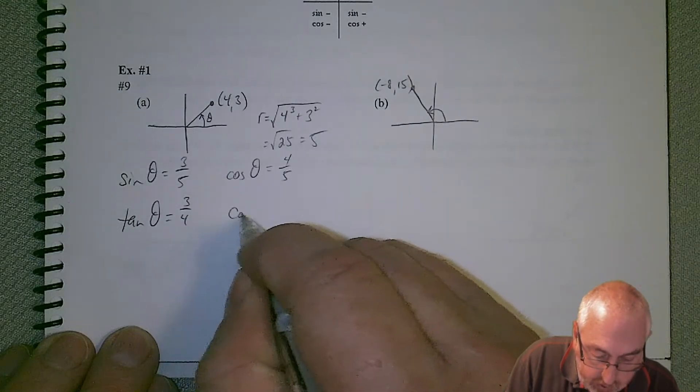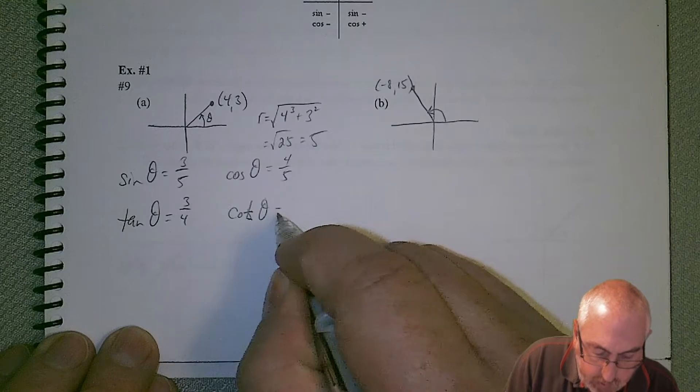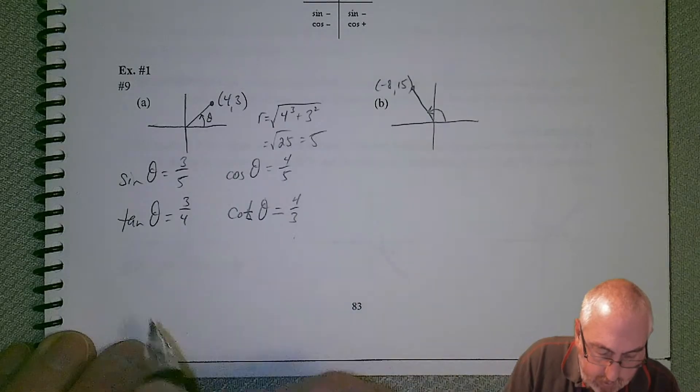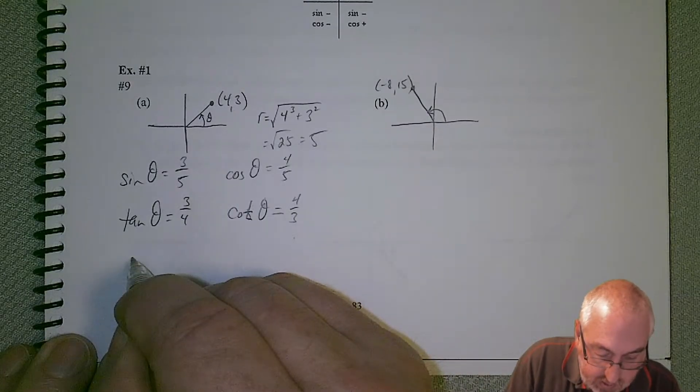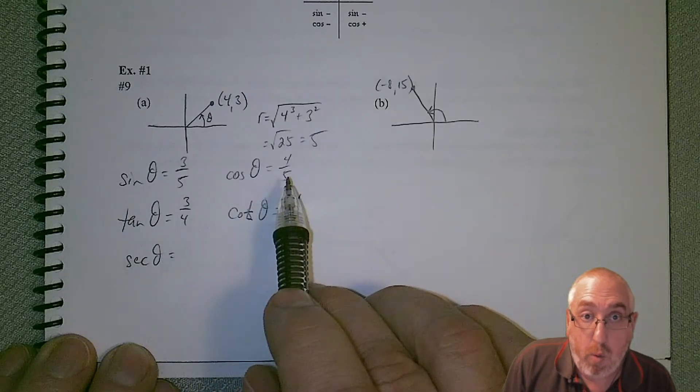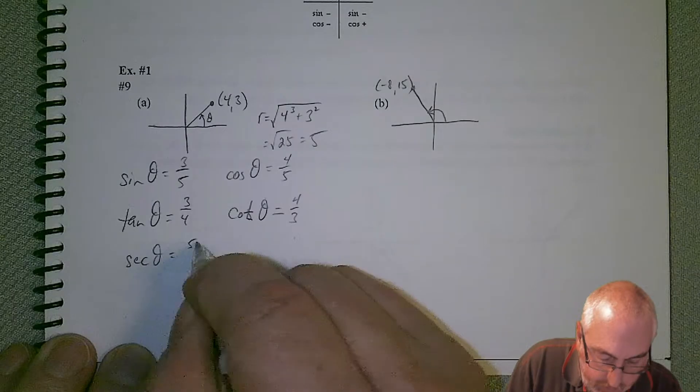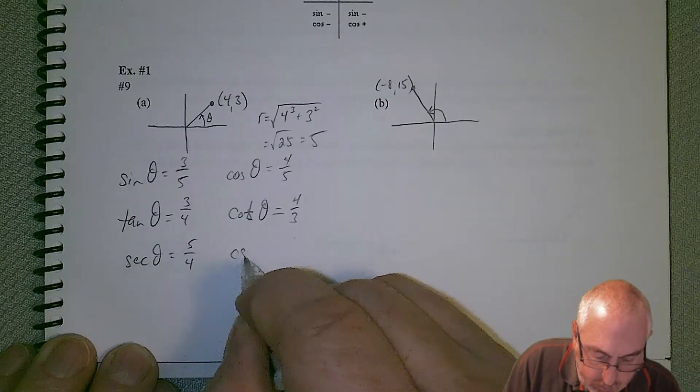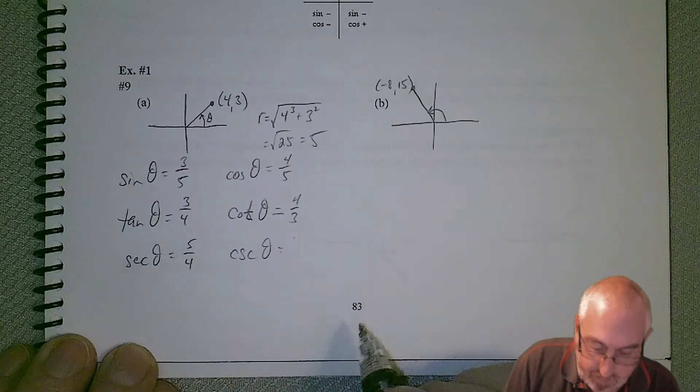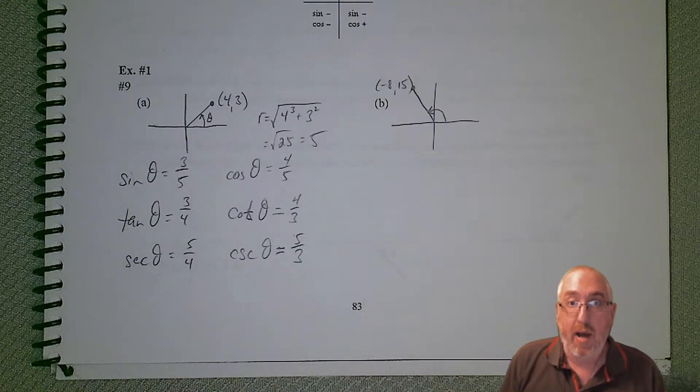And then cotangent, if I make a t there, it's just going to be the reciprocal, so 4 over 3. Then we have the secant, which is the reciprocal of cosine, so 5 over 4. And then we got cosecant, which is the reciprocal of sine, so 5 over 3. And there we have it.